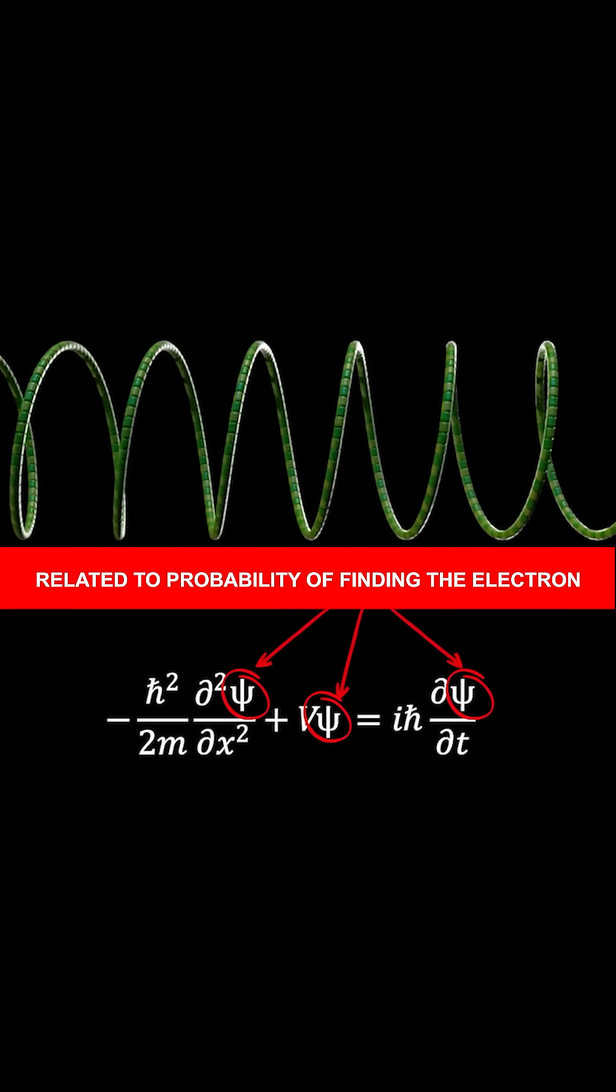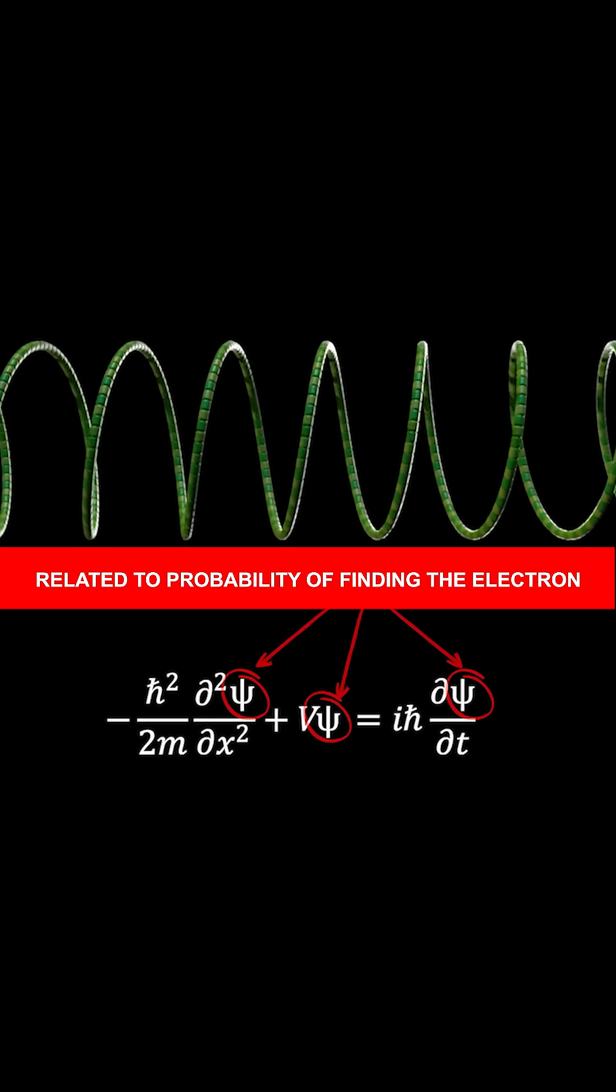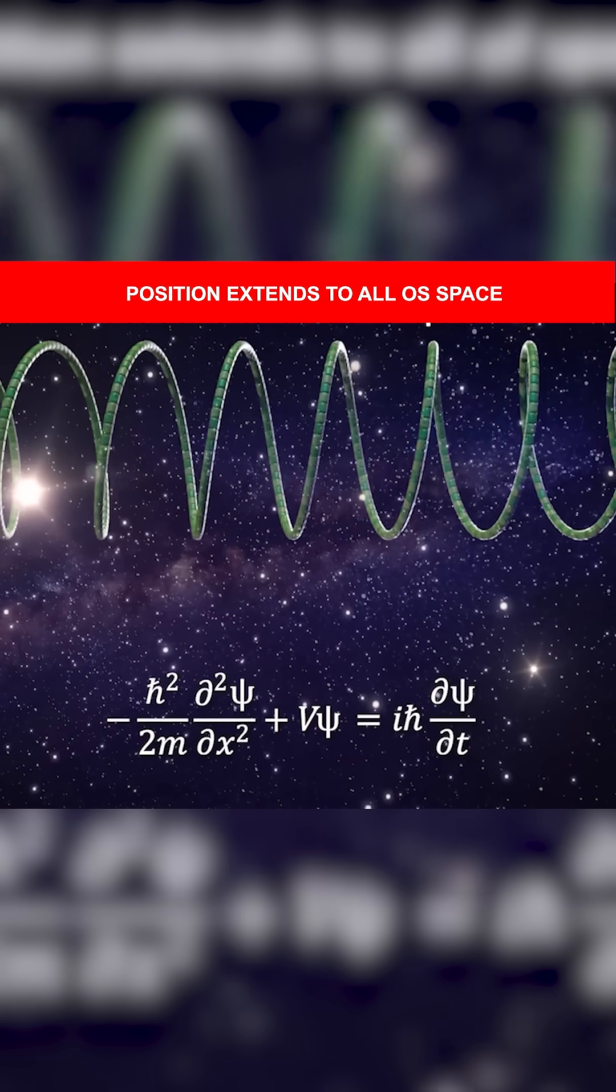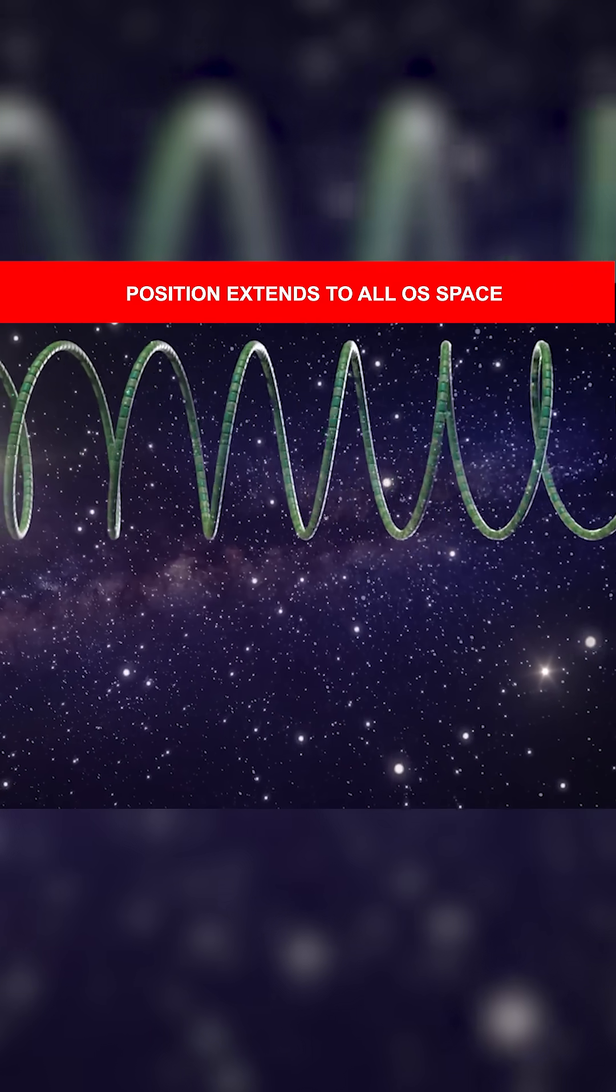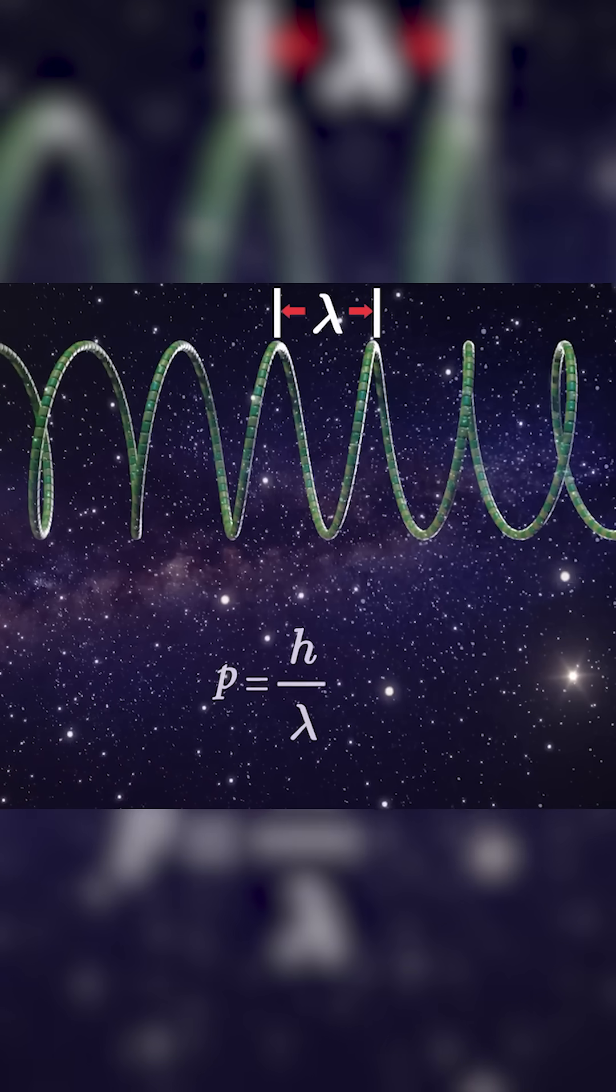But a perfect sine wave for the electron spreads that probability throughout all of space, so the position of the electron is completely uncertain. However, a perfect sine wave means we know its wavelength, so we would know its momentum quite precisely because of the de Broglie relation, where momentum equals Planck's constant over the wavelength.